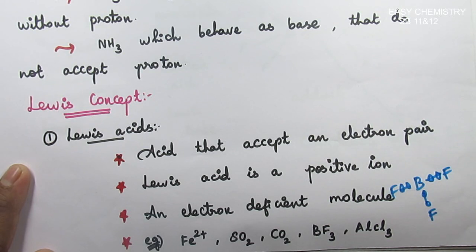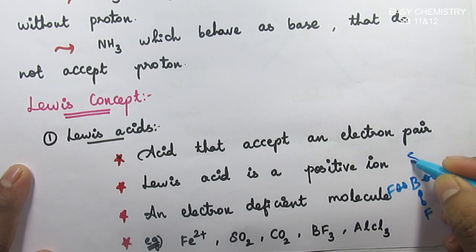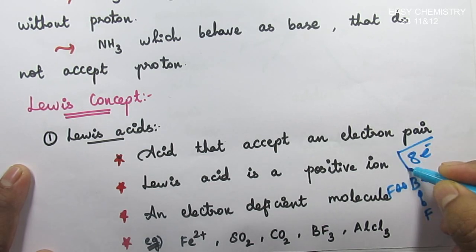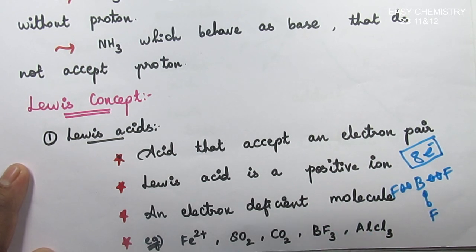And the octet configuration needs two more electrons. Neutral molecule, electron-deficient molecules. Eight electrons is needed, not present in boron trifluoride. One, two, three, four, five, six electrons. So octet means eight electrons for stability. This is chemical bonding.